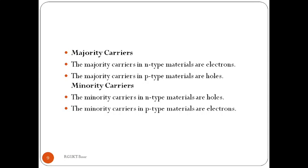In summary: the majority charge carriers in N-type materials are electrons, and the minority charge carriers are holes. The majority charge carriers in P-type materials are holes, and the minority charge carriers are electrons. We make extrinsic semiconductors to improve the conductivity of the material. To make N-type, we dope 5th group elements into the pure semiconductor; to make P-type, we dope 3rd group elements into the semiconductor.